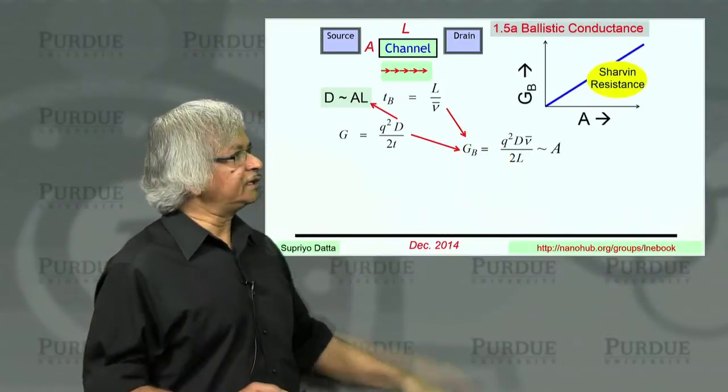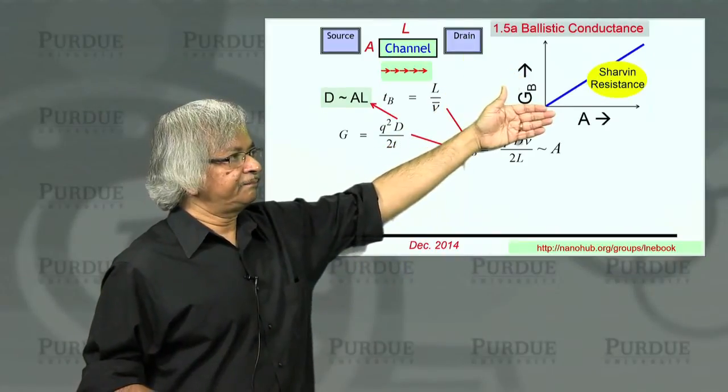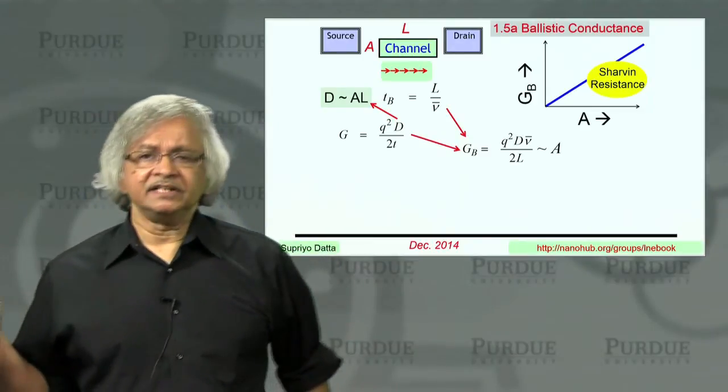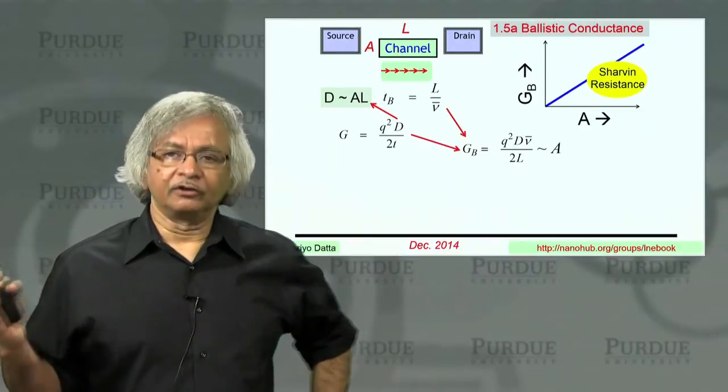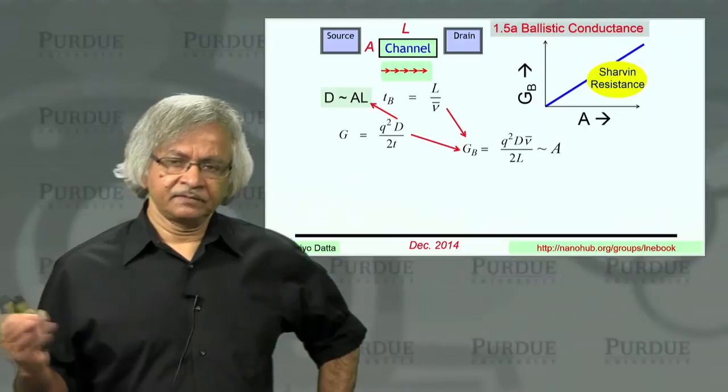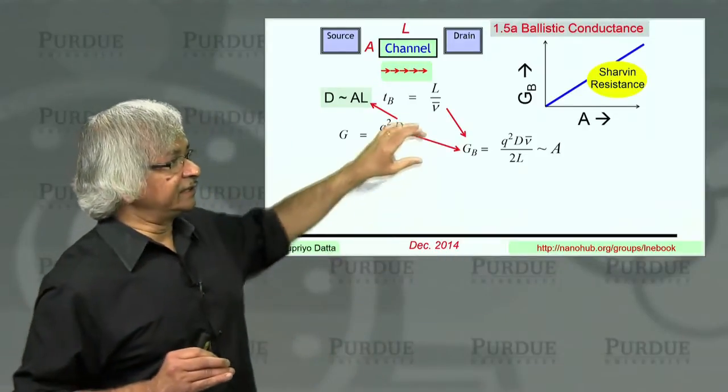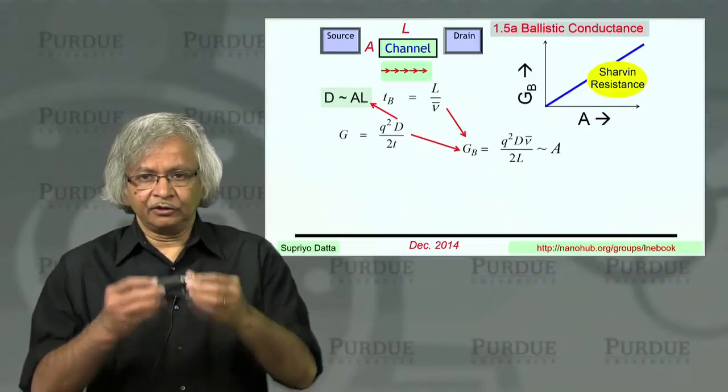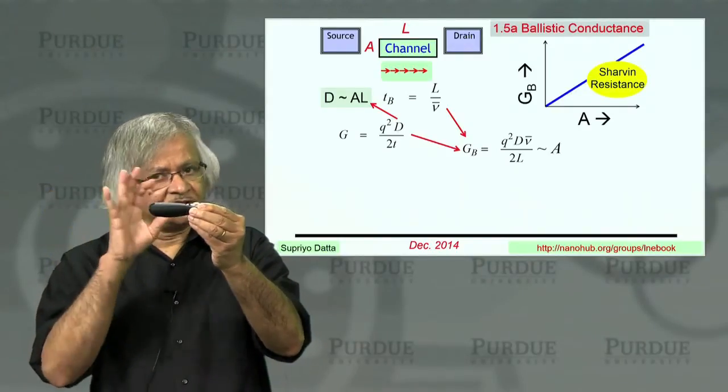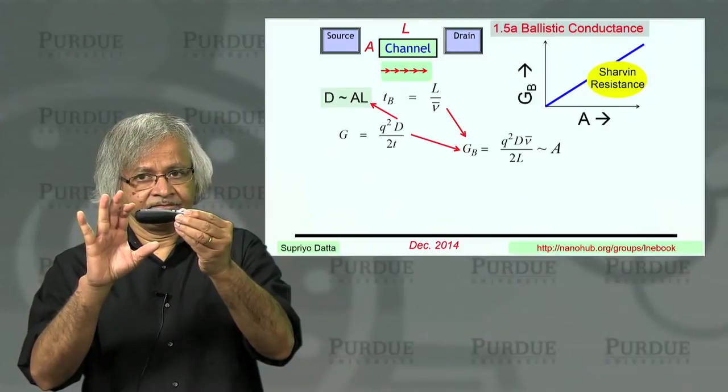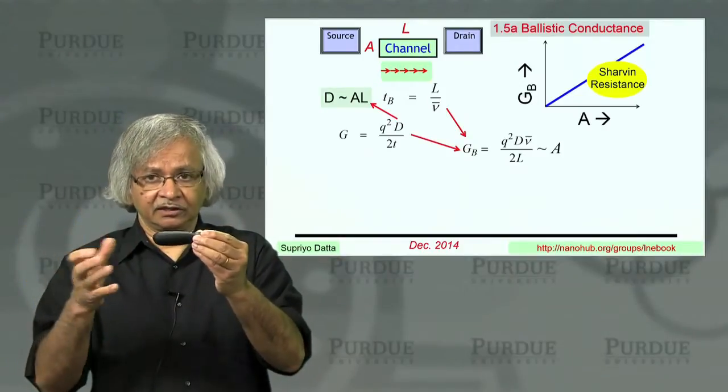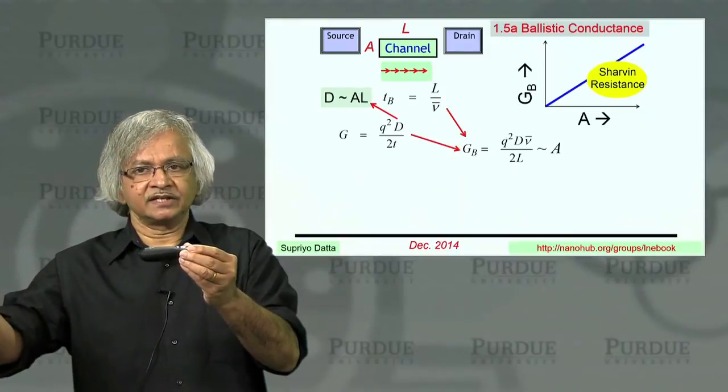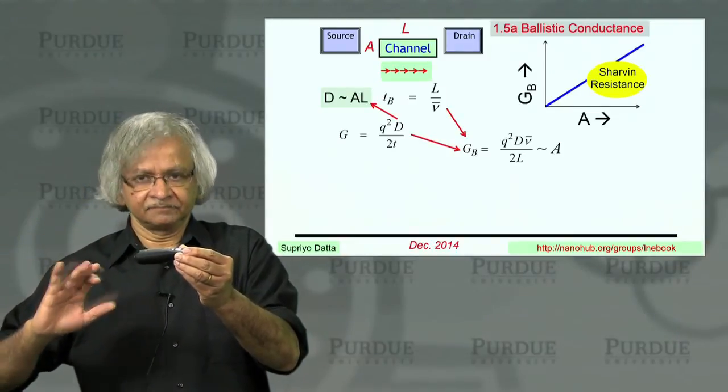So if you plotted it, it would look something like this. And this was observed back in around 1969. And it's often called the Sharvin resistance. The point to note here is that this ballistic conductance is independent of the length. You could take a ballistic conductor, make it twice as big. It's still the same ballistic conductance, which is very different from normal conductors, where if you make something twice as long, the resistance is twice as much, conductance is half as much.